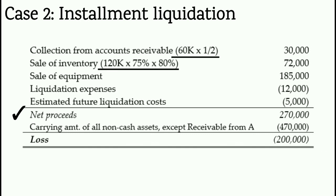We compare the net proceeds with the carrying amount of all non-cash assets, excluding receivable from A. Non-cash assets: AR 60,000 pesos, inventory 120,000 pesos, equipment 290,000 pesos — total carrying amount 470,000 pesos. Since the carrying amount of 470,000 pesos is greater than net proceeds of 270,000 pesos, there is a loss of 200,000 pesos.